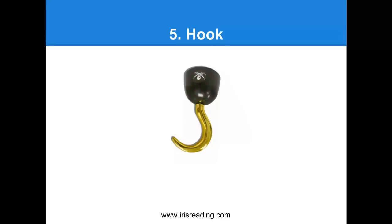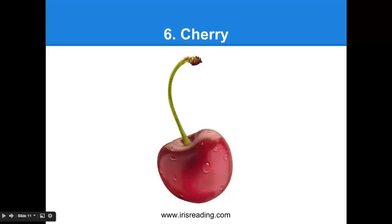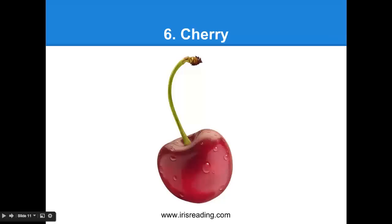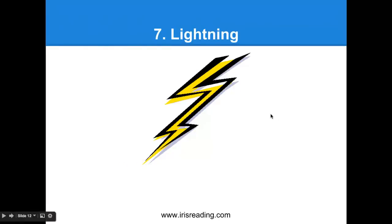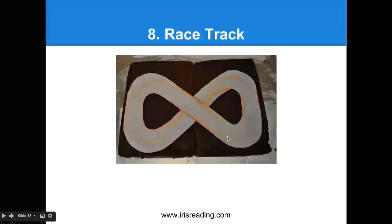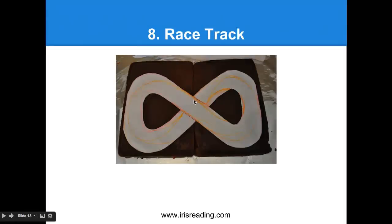Number six is a cherry. The visual representation of six is a cherry — picture the circular part, it looks like a six. Just manipulate it and view that six as a cherry. Number seven is going to be lightning. Picture sevens — you can think of lightning as just seven after seven after seven. Number eight is a racetrack for race car drivers going around it. Now I know they wouldn't really make racetracks this way because people would crash in the middle, but just imagine number eight as our racetrack.